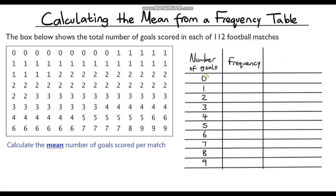The number of goals goes from zero to nine, because zero is the minimum and nine is the maximum. Now we just need to fill in the frequency. On how many occasions were there zero goals? Well, there were nine matches where no goals were scored, so I'm going to put nine in here. Now I'm going to do the same thing for one goal, two goals, all the way up until I get to nine goals.